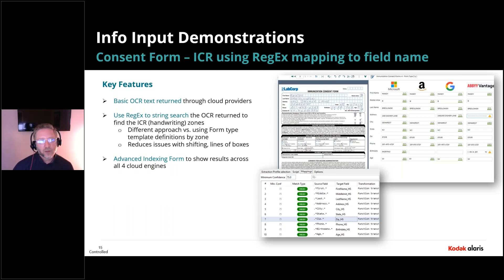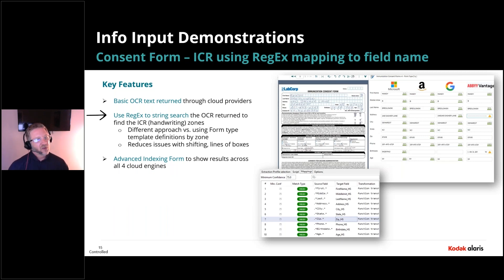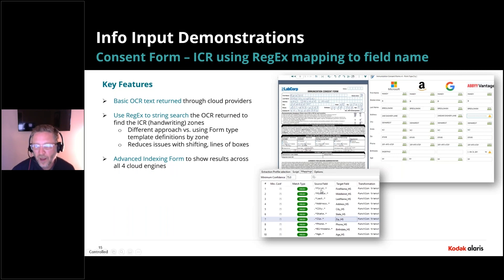We're actually going to be using what we call a regex, or regular expression search. So the cloud engines will return OCR, and then we're going to look for the word first name, middle, last name, address.